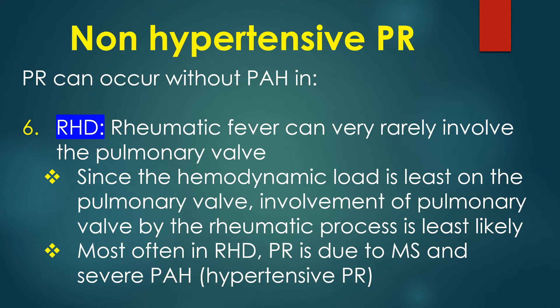Since the hemodynamic load is least on the pulmonary valve, involvement of the pulmonary valve by the rheumatic process is least likely. Most often in rheumatic heart disease, PR is due to mitral stenosis and severe pulmonary hypertension — i.e., hypertensive PR.